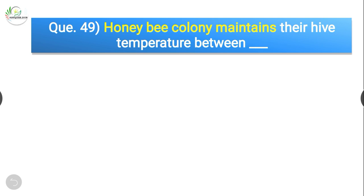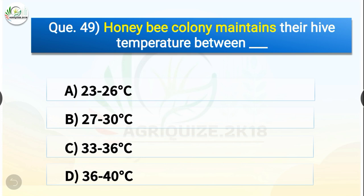Question number forty-nine: Honey bee colony maintains their hive temperature between dash. The options are 23 to 26°C, 27 to 30°C, 33 to 36°C, or 36 to 40°C. The correct answer is option C — 33 to 36°C. Honey bee colony maintains their hive temperature between 33 to 36 degrees Celsius.